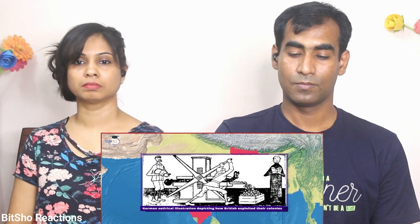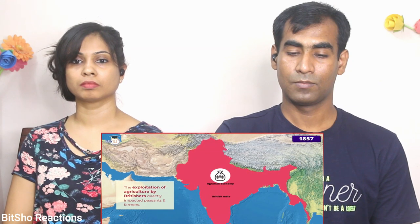First, let us understand the major policies imposed under British rule. India's agriculture was the most important economic activity and the primary source of revenue, but British rule exploited this system, with direct impact on farmers and peasants. The East India Company used colonial tools of trade and land revenue extraction.